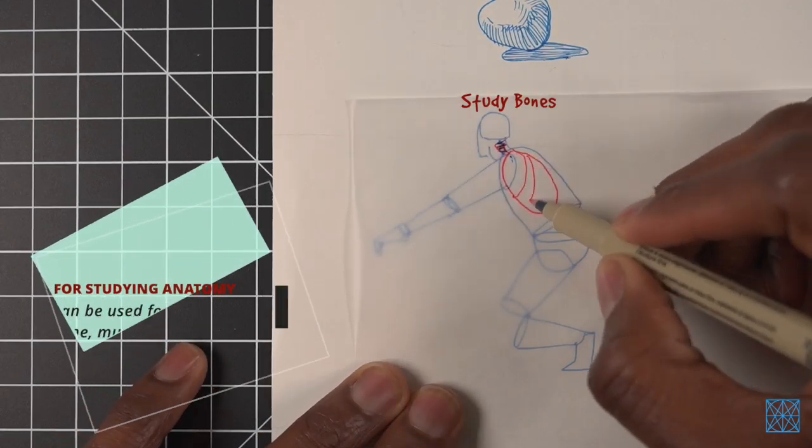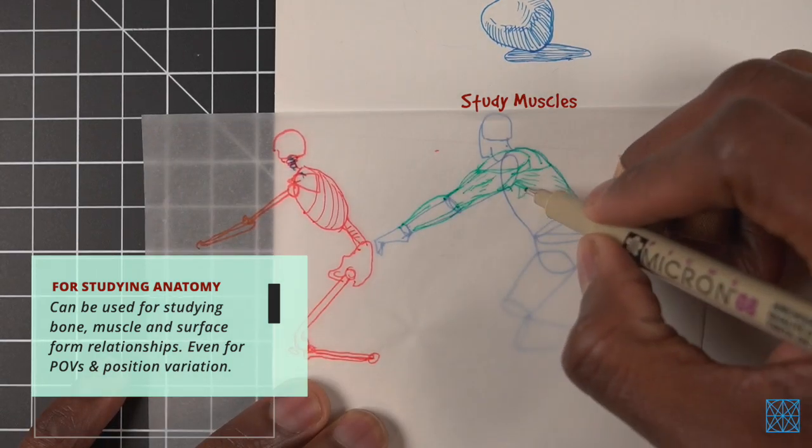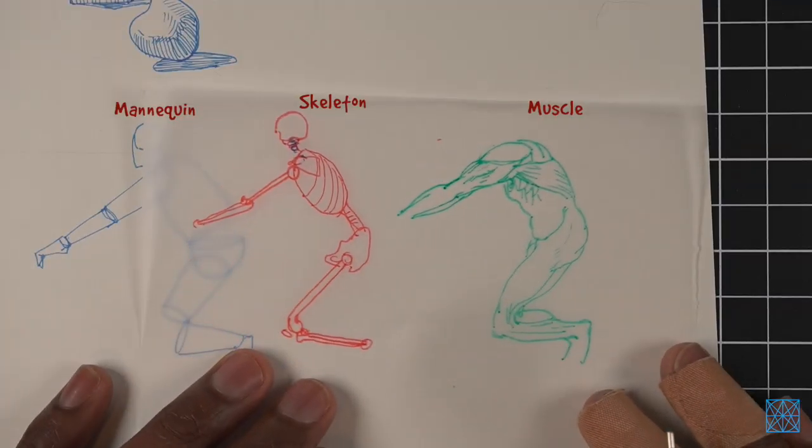And it's super useful for anatomy because you can sketch x-ray-like drawings of bones or muscle to test or improve your understanding of anatomy and for interpreting surface forms.